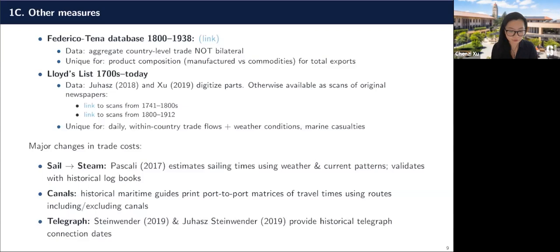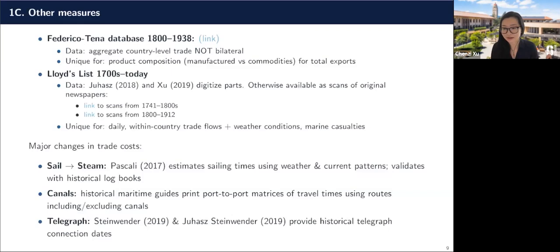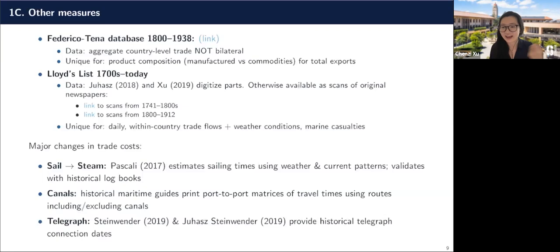One other dataset that I think is super cool is Lloyd's List, which Rika Juha used in her job market paper. This was a daily newspaper, and the amazing thing is that it gives you ship-by-ship flows of shipping traffic around the world over a really long period. In terms of a panel, it has very long coverage and covers the entire world. All the scans have now been fully digitized and are online, so you can follow the links and send them off to be digitized if that's something you want to work with.